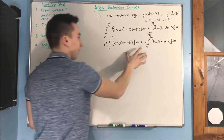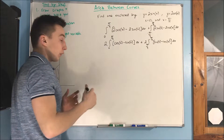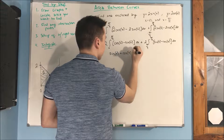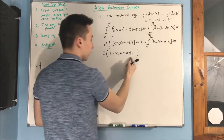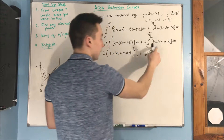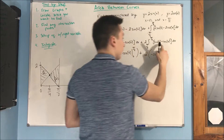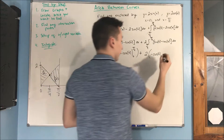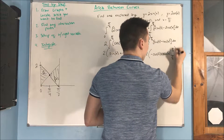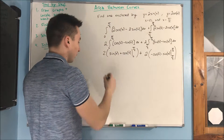We can do a little manipulation before we integrate to make things easier — we can factor out that 2. So we get 2 times the integral from 0 to pi over 4 of cosine of x minus sine of x dx, plus 2 times the integral from pi over 4 to pi over 2 of sine of x minus cosine of x dx. We can factor a 2 out of the entire thing, but let's just integrate now.